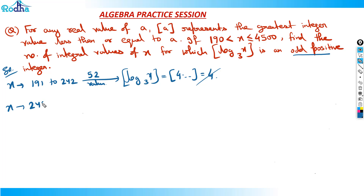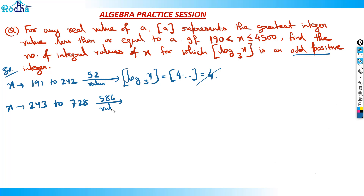Starting from 243 (which is 3 to the 5) up to the next power of 3: 3 to the 6 is 729, so I end at 728. From 243 to 728, including both endpoints, the difference is 485, so there are 486... that is 486 values — wait, 728 minus 243 = 485, plus 1 = 486... actually 243 to 728 gives 486 values. At all these values, log of x base 3 is 5-point-something, so GIF = 5, which is an odd positive integer.